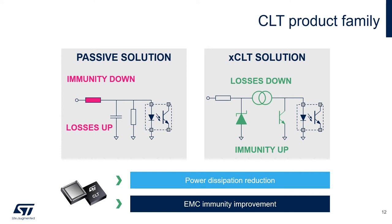Our integrated solution based on CLT products — which stands for current limited termination — brings several advantages. First of all, the input volt-ampere characteristic is no more linear, but the current is limited across the whole voltage range to a minimum value just to ensure compliancy with the IEC standard. That's why the power dissipation is significantly reduced. We also implement various protection functions in the integrated products for improved performance and high EMC immunity.